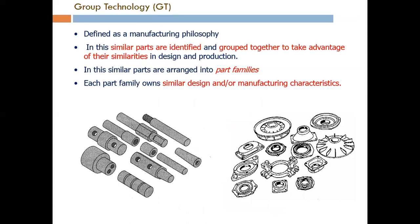Group technology is mainly a manufacturing philosophy in which we first identify similar parts and then group them together to take advantage of their similarities in design and production. Components that are similar in design are kept together, and similar parts are arranged into part families, as shown in the figure on the left side. These different components have similarities — they are cylindrical in nature.